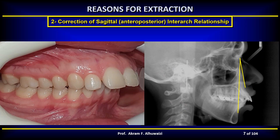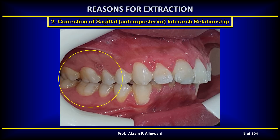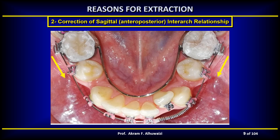In class 2 malocclusion with abnormal upper proclination and normal alignment of the lower teeth, and when the A point is abnormally forward relative to the B point, it is advisable to extract teeth only in the upper arch and to retract the upper incisors and canines. However, when the lower arch is crowded and/or the molars are not in a full cusp class 2 relationship, lower extractions may also be needed. This will aid in the relief of crowding and bring the lower molars forward to establish a class 1 molar relationship.